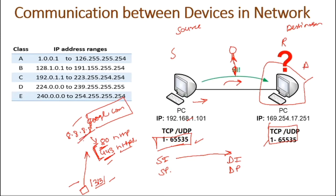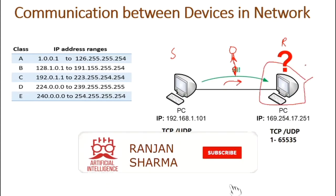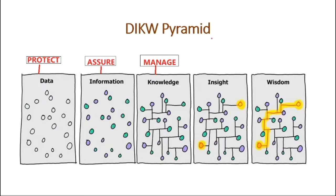Suppose this is a sender and this is a receiver. This system is sending traffic to that one. If a person in between is listening to this traffic, they can read the information being sent. Or suppose this is not the actual receiver — this is an attacker — so they could gain entry into our system. This is how an attacker uses the IP address and port.